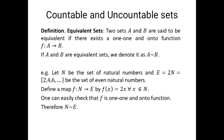Let us discuss an example. Let N be the set of natural numbers and E be the set of even natural numbers. Define a map f from N to E by f(x) = 2x for all x in N. Then we can easily check that the map f is one-to-one and onto.